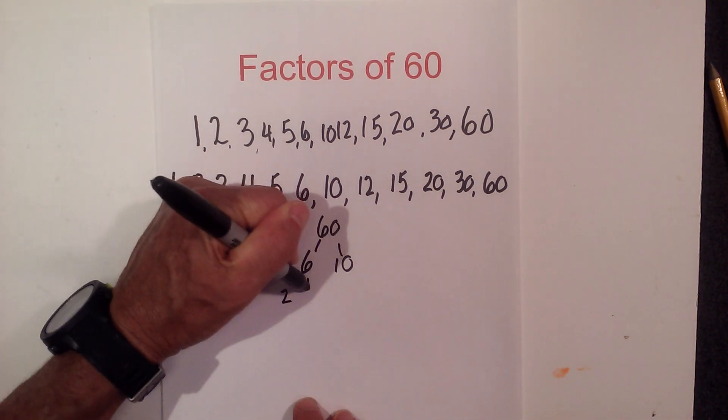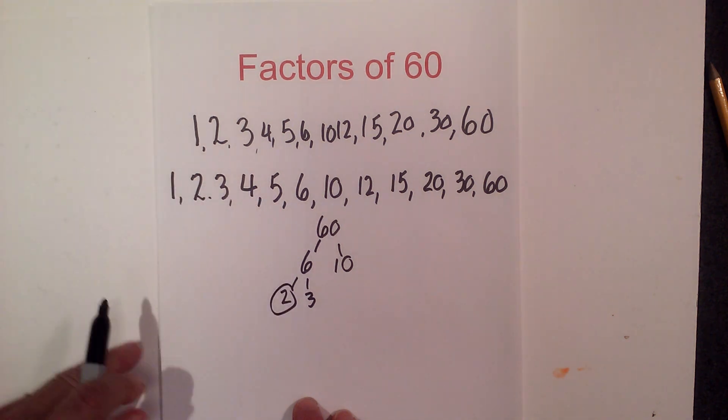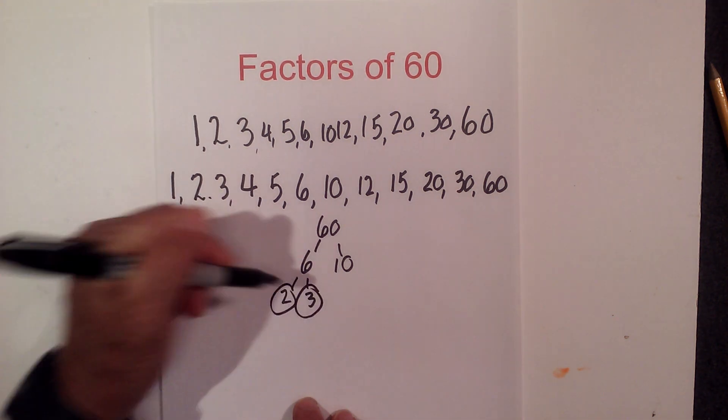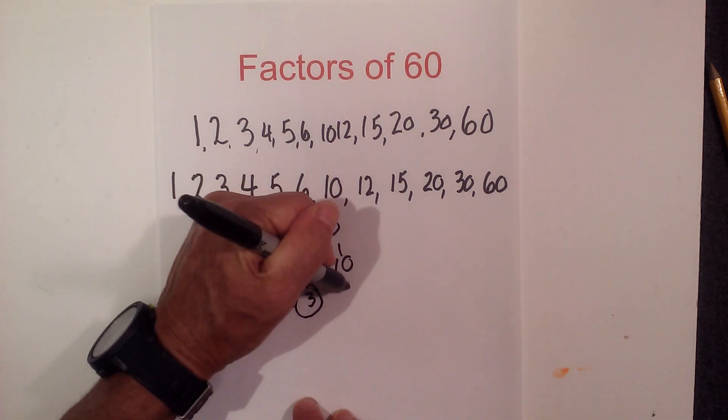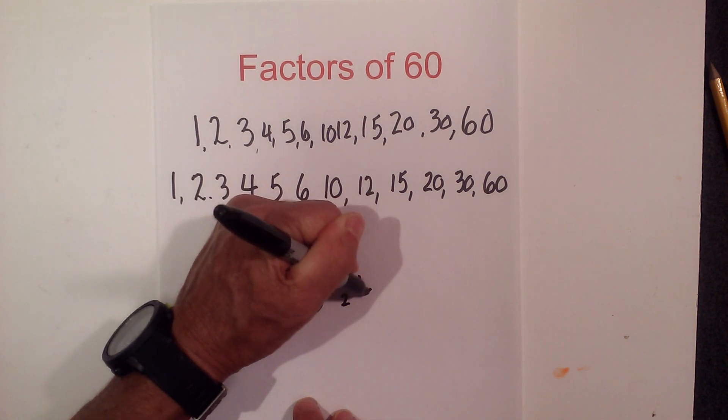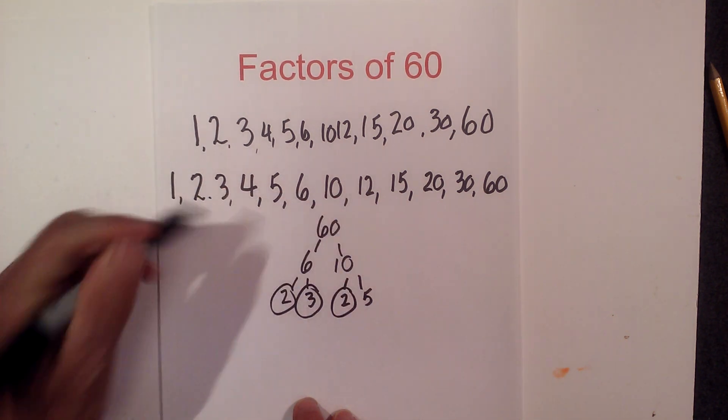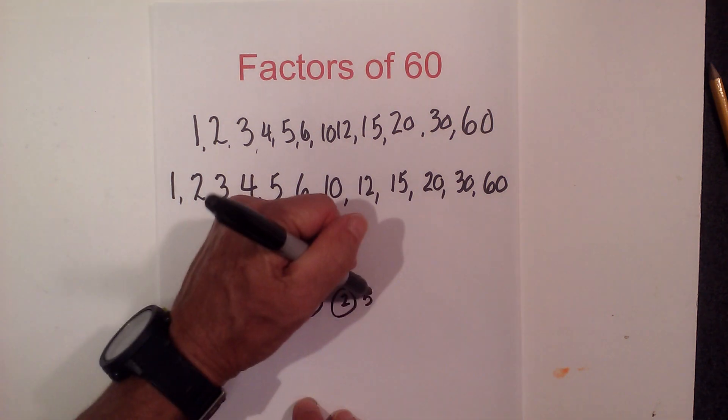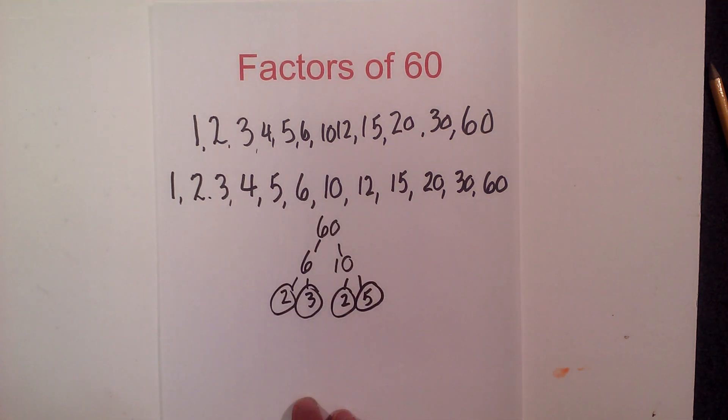2 times 3 is 6, circle the 2 because it is prime, circle the 3 because it is prime, and now 2 times 5 equals 10, circle the 2 because it is prime, circle the 5 because it is prime.